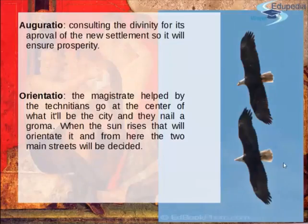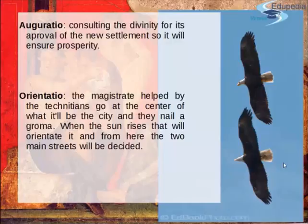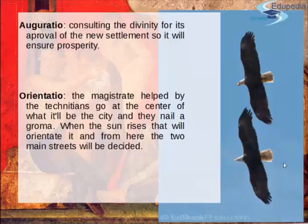The first ritual step was the auguratio — consulting the gods for divine approval of the new settlement, seeking prosperity. Fortune tellers called augurs normally made a sacrifice, reading the insides of a bird to find answers. This echoes the eagles and vultures that flew above Romulus and Remus during the first foundation of Rome.